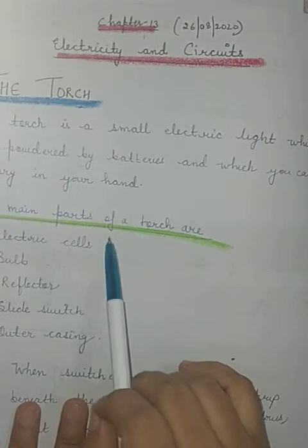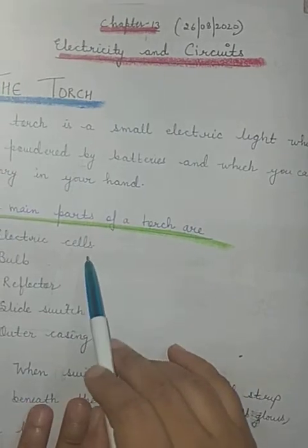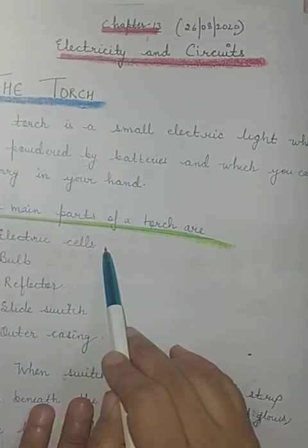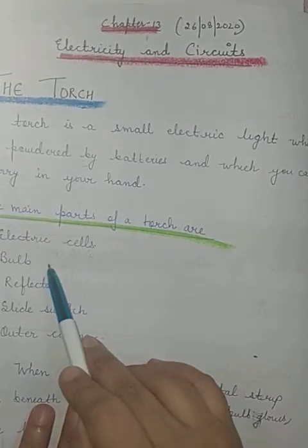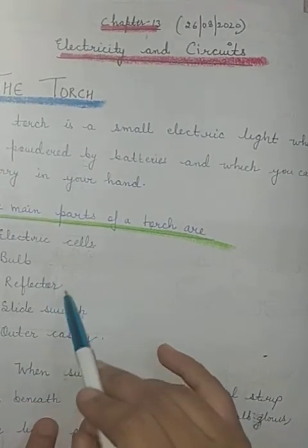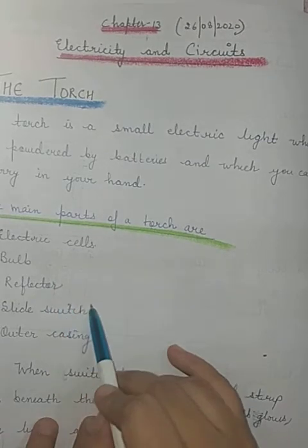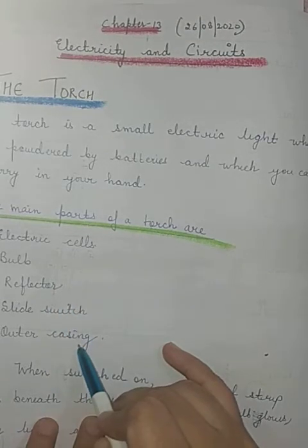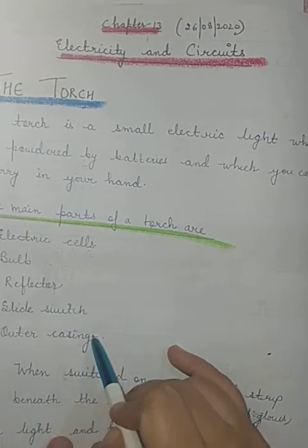The five main parts of the torch are: electric cell, bulb, reflector, slide switch, and outer casing.